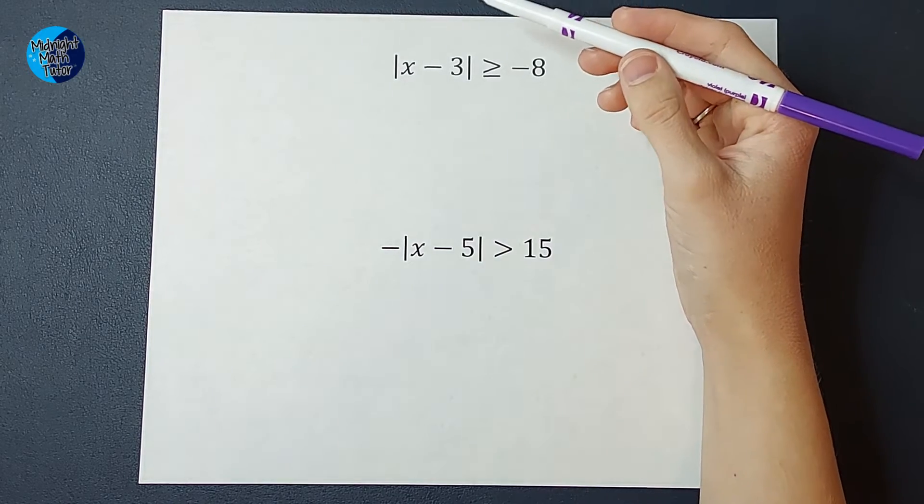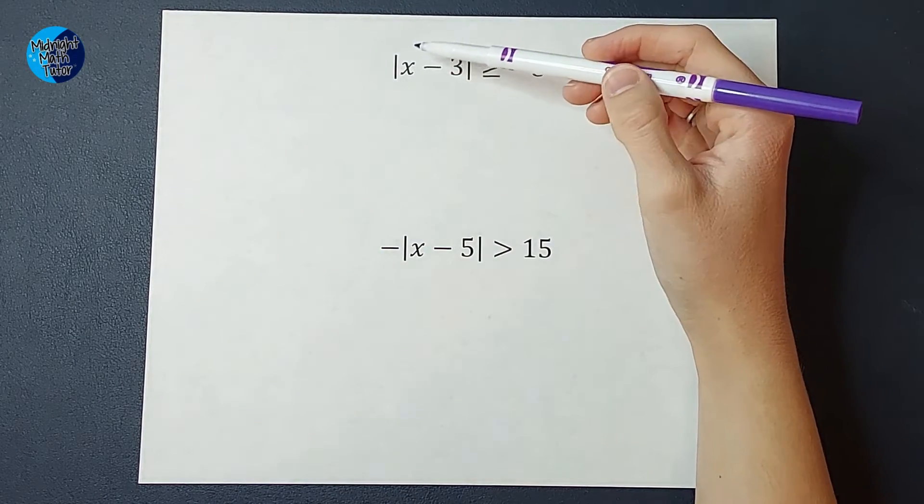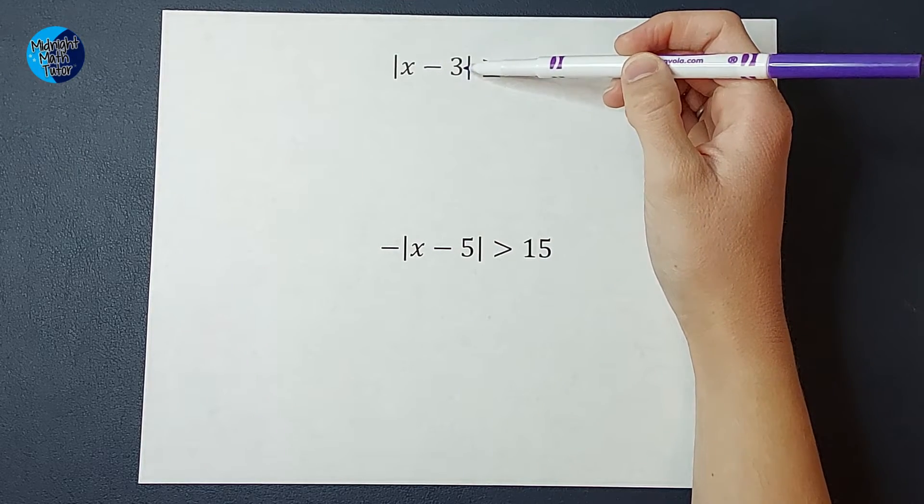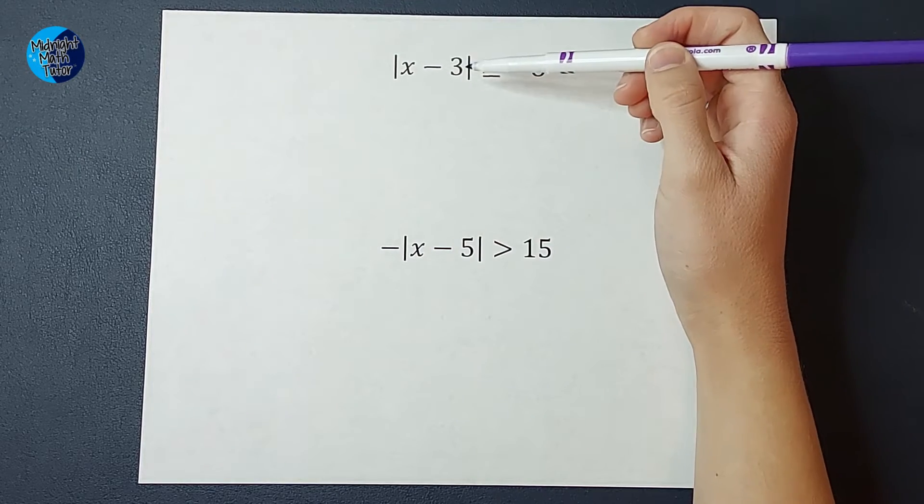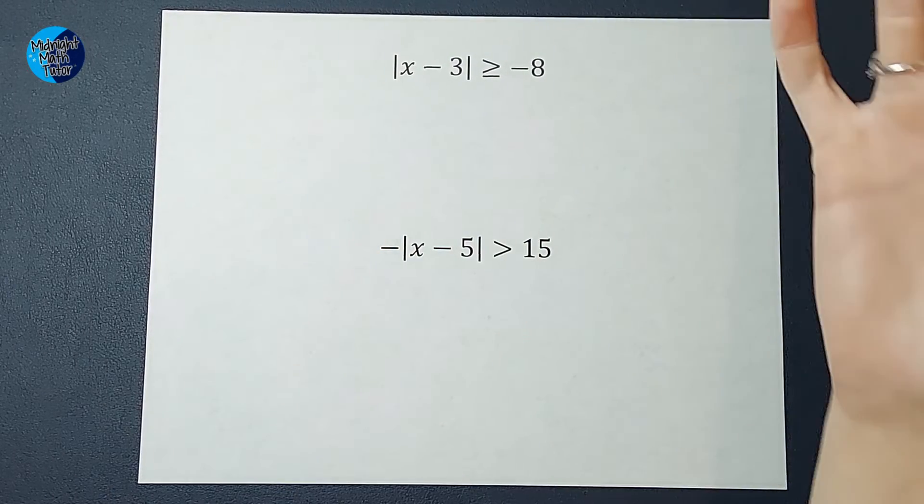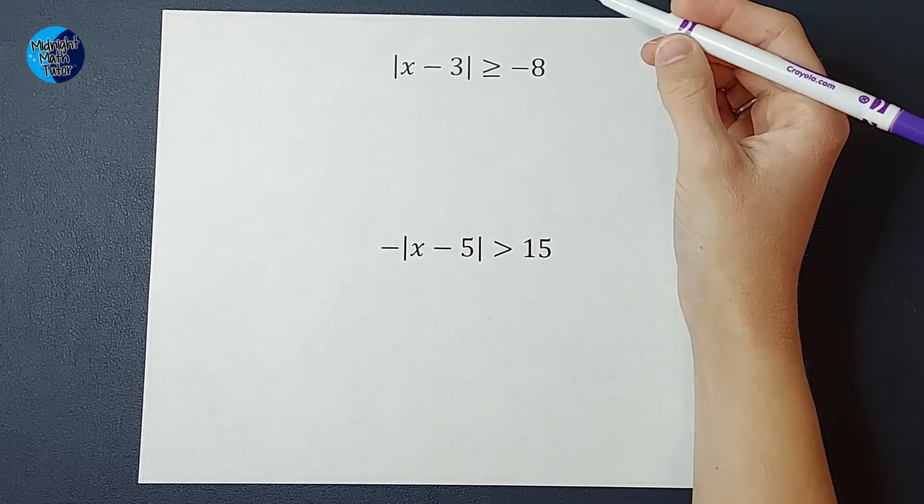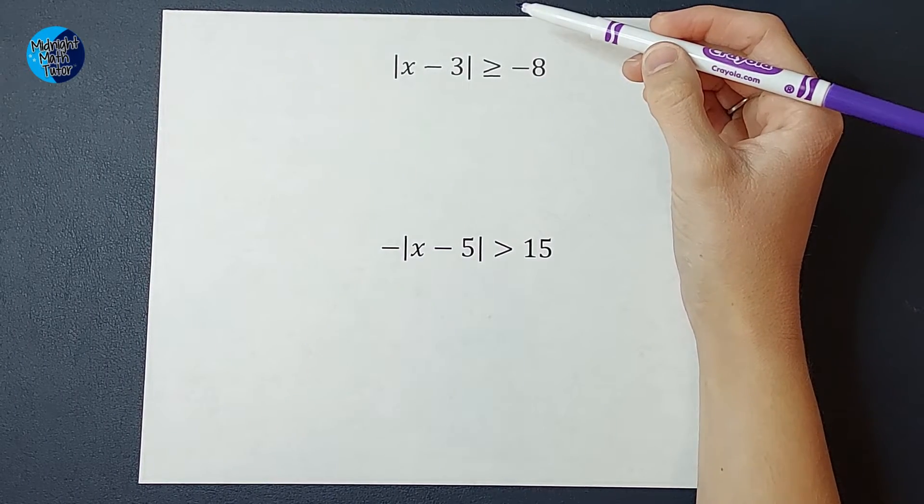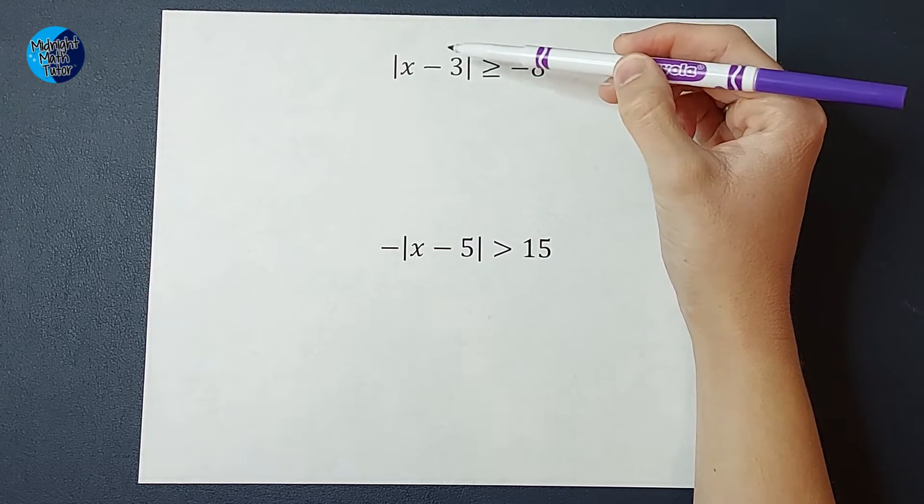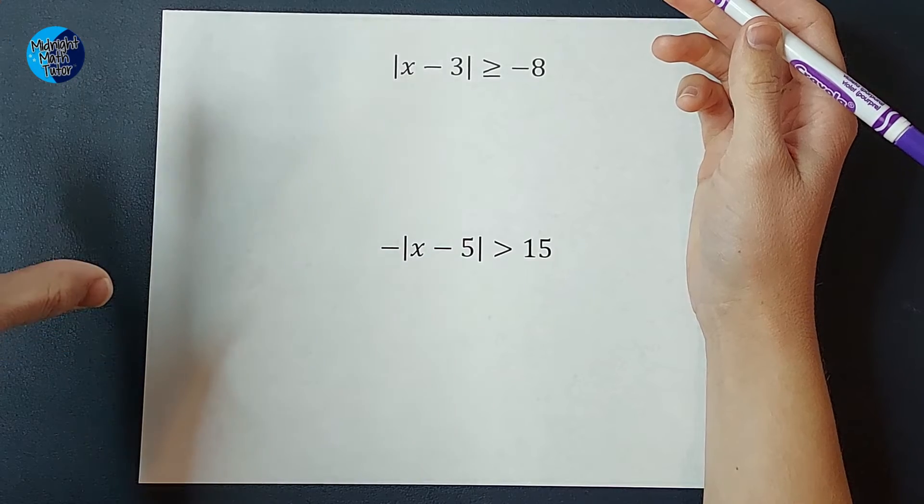What if I plug in a negative number? What if I plug in like negative 70? Well, negative 70 minus 3 would give me negative 73. The absolute value of negative 73 would be a positive 73, and that would be greater than or equal to negative 8. Is there any number you can think of that I would plug in and it would not be greater than negative 8? I'll give you a second.